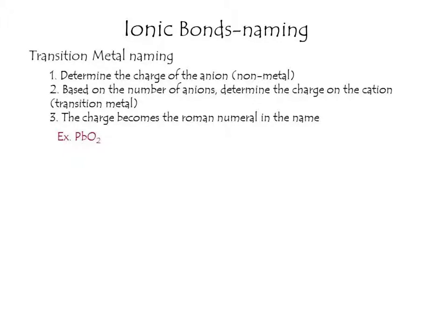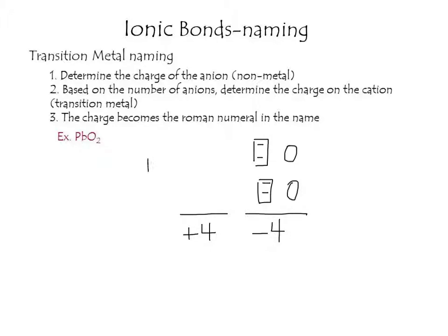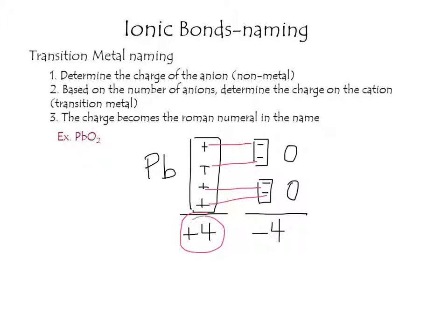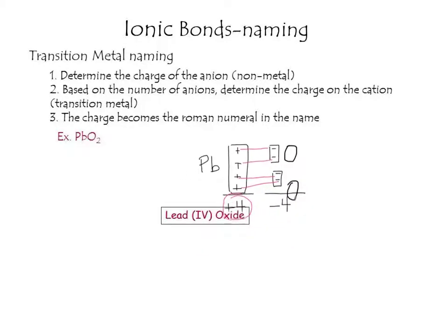Let's do two more exercises. The first is PbO2. There are two oxygens, each with a minus 2 charge, giving a total of minus 4. The cation must therefore be plus 4. There is only one lead, so lead carries the entire plus 4 charge. We write this as lead(IV) oxide.